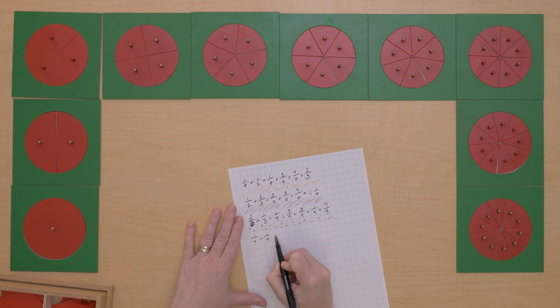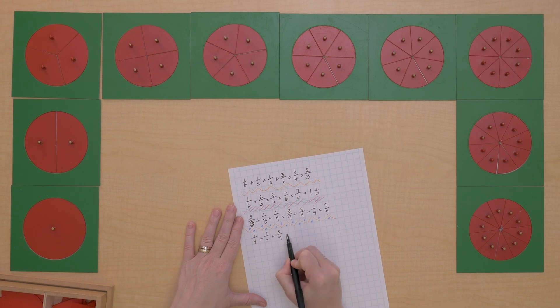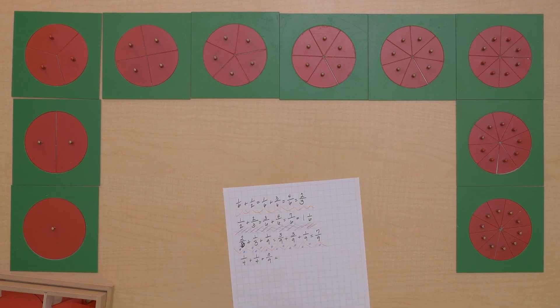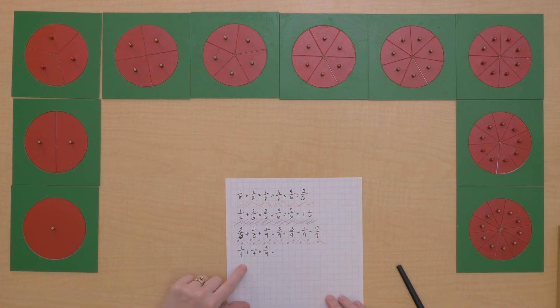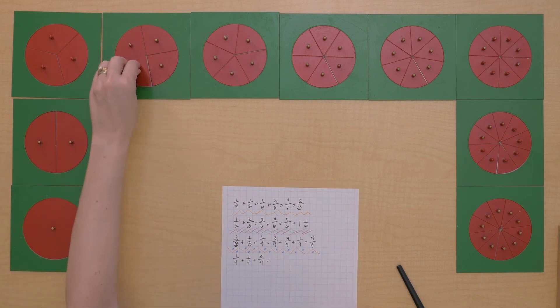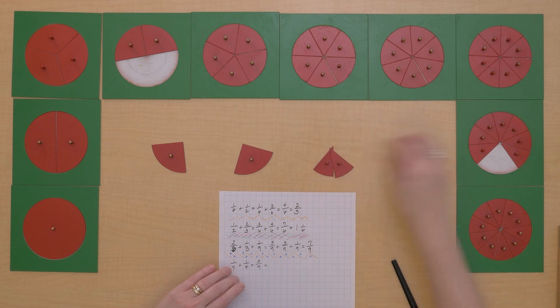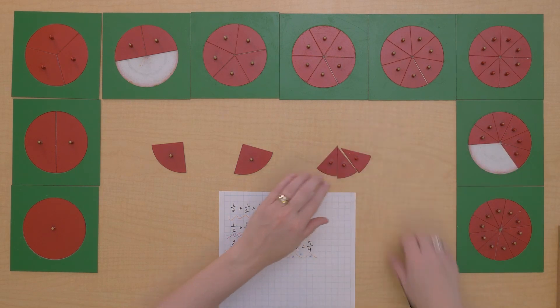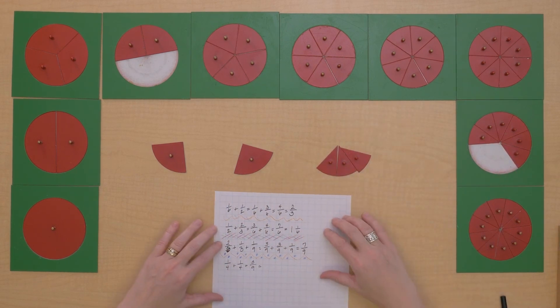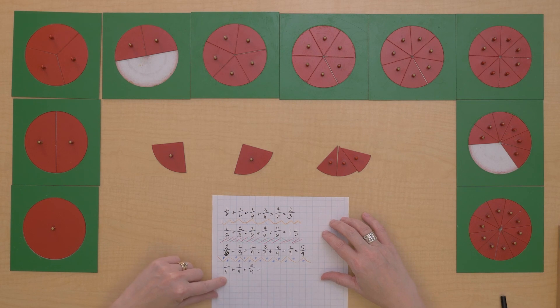Let's do one-fourth plus one-fourth plus three-ninths. So we're going to do one-fourth plus one-fourth plus three-ninths. One-fourth, one-fourth, three-ninths. Okay, what can we do here?